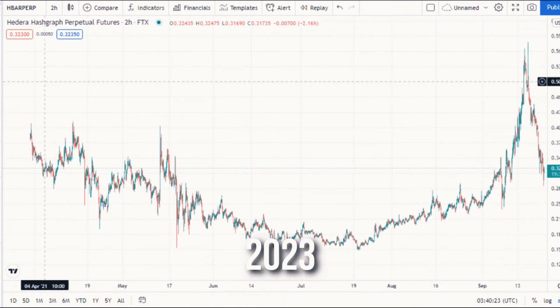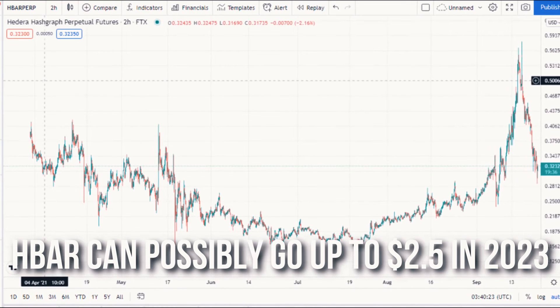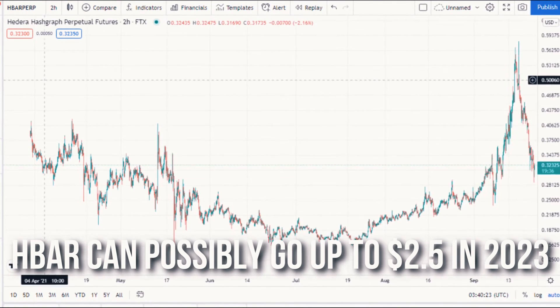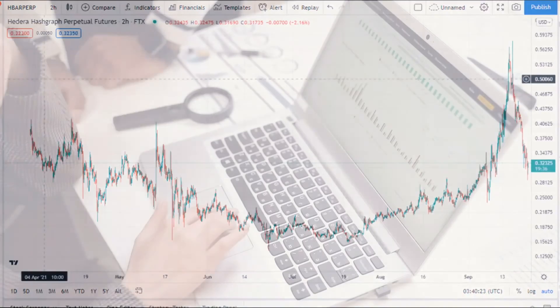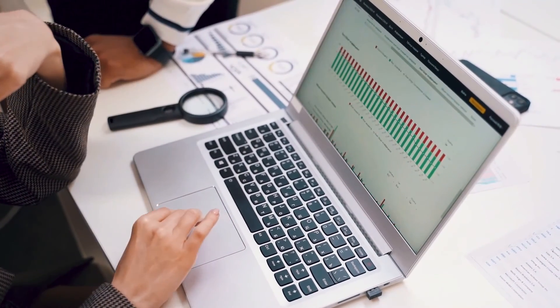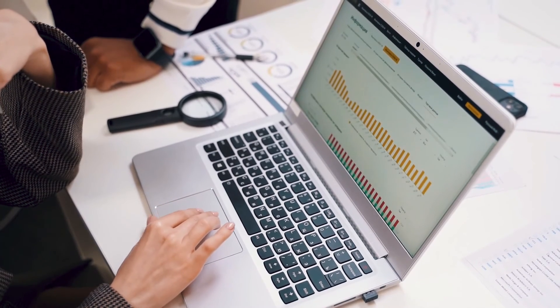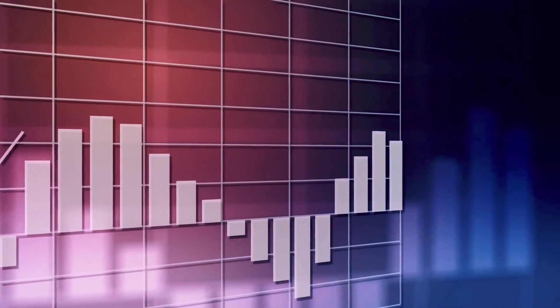2023. As per one Hedera Hashgraph price prediction, HBAR has the potential to go up to $2.50 in 2023. While that is definitely conceivable, a limit of $2 would be a more practical expectation. Simultaneously, there is additionally a likelihood that HBAR price can tumble to $1, which would set out an astonishing buying opportunity.